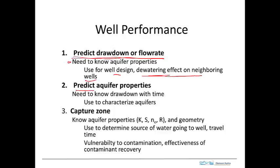Another thing we can do is predict aquifer properties. This is done by pumping a well, measuring drawdown as a function of time, and then using a mathematical analysis that predicts drawdown as a function of time. We match the mathematical analysis to the field data by adjusting the properties — K, S, and T, though really only two of those three, either K or T. Once we've done that, we have a way to estimate these aquifer properties.